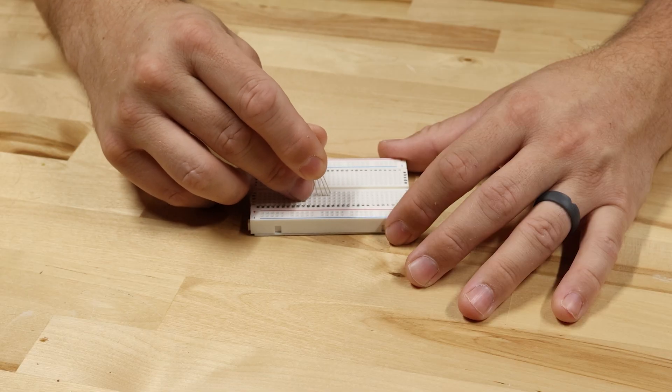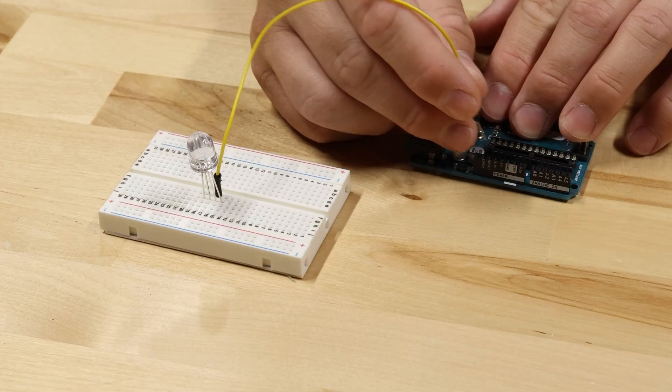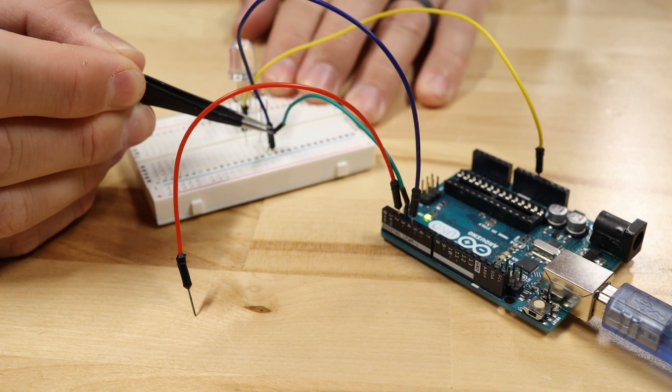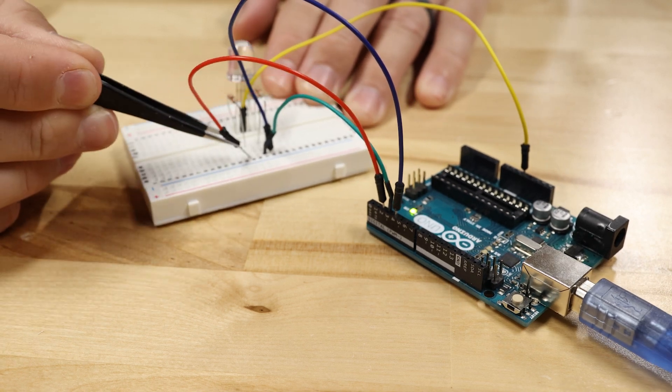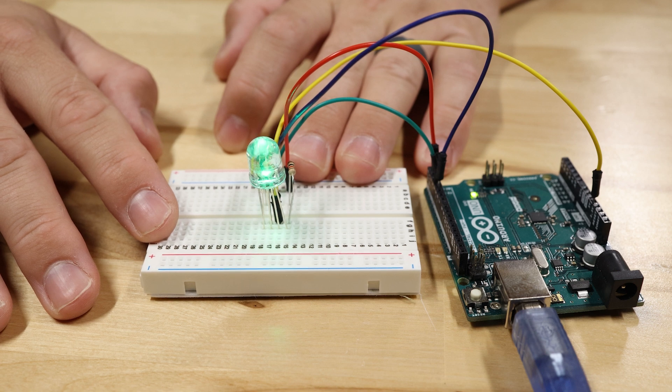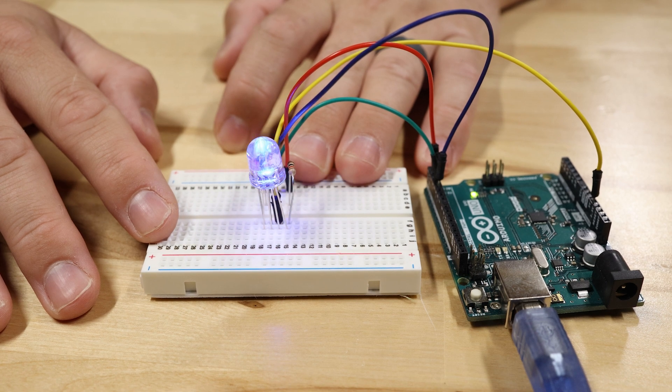I'll start by connecting just one RGB LED to my microcontroller. The common anode gets connected to five volts while the red, green, and blue cathodes get connected to three GPIO pins through current limiting resistors. I can turn on each LED by pulling the corresponding GPIO pin low. To turn off the LED I pull the same GPIO pin high.